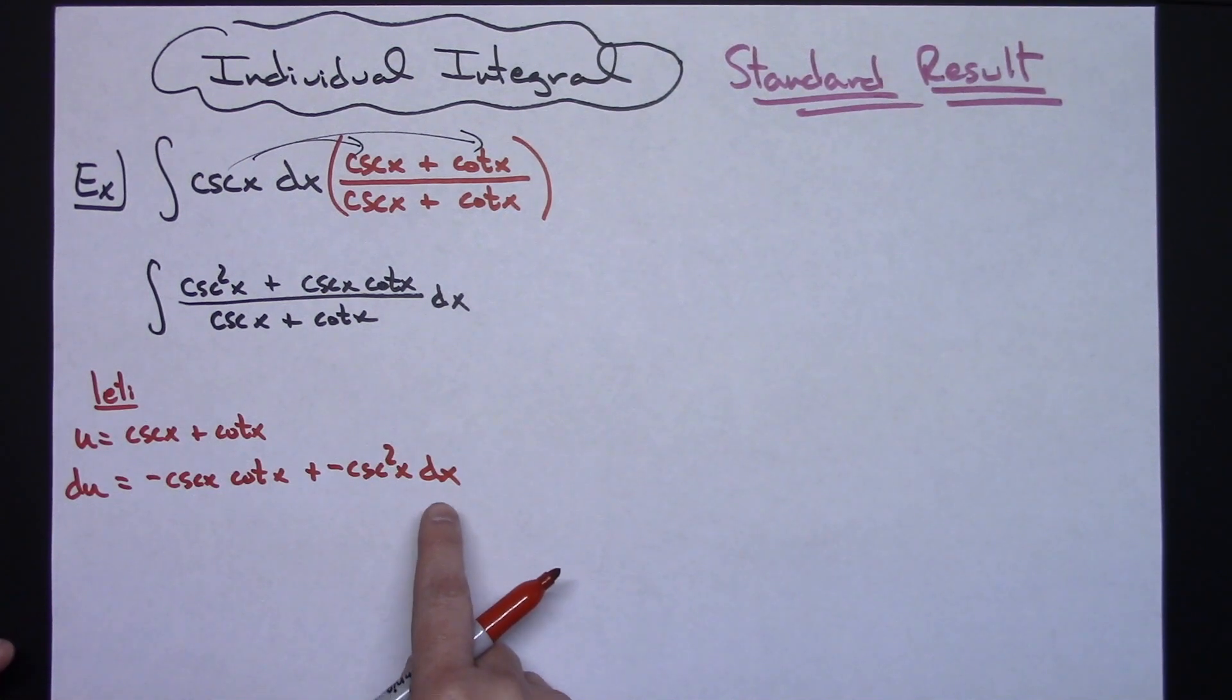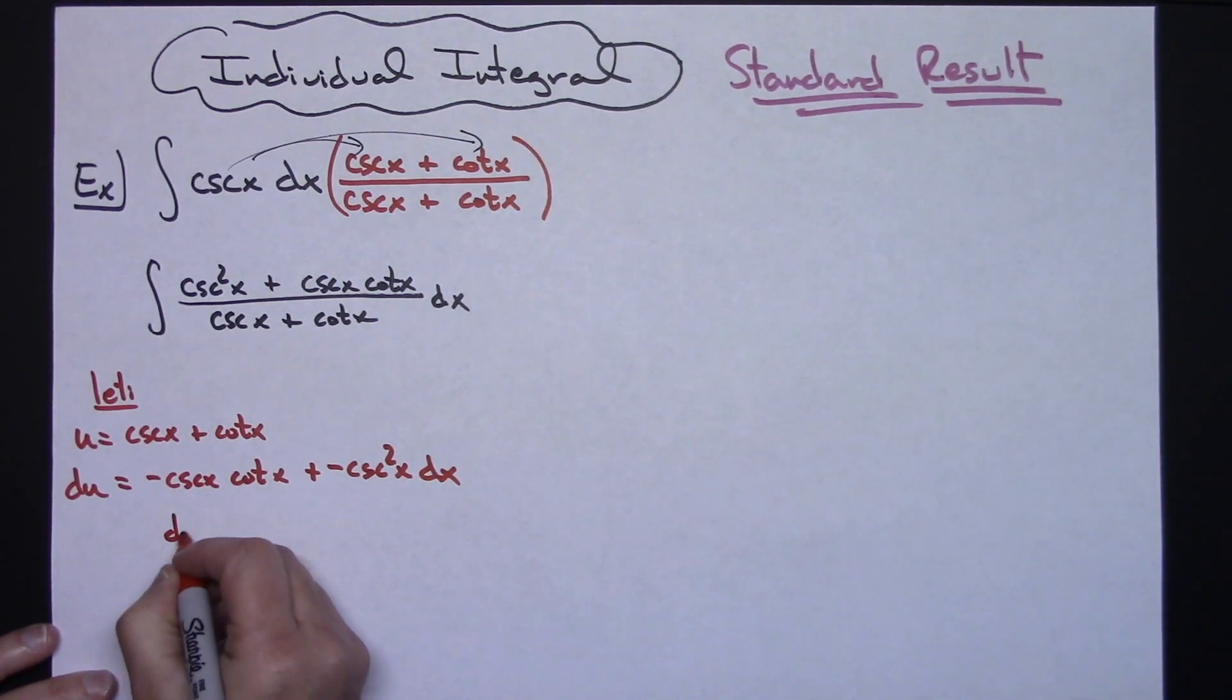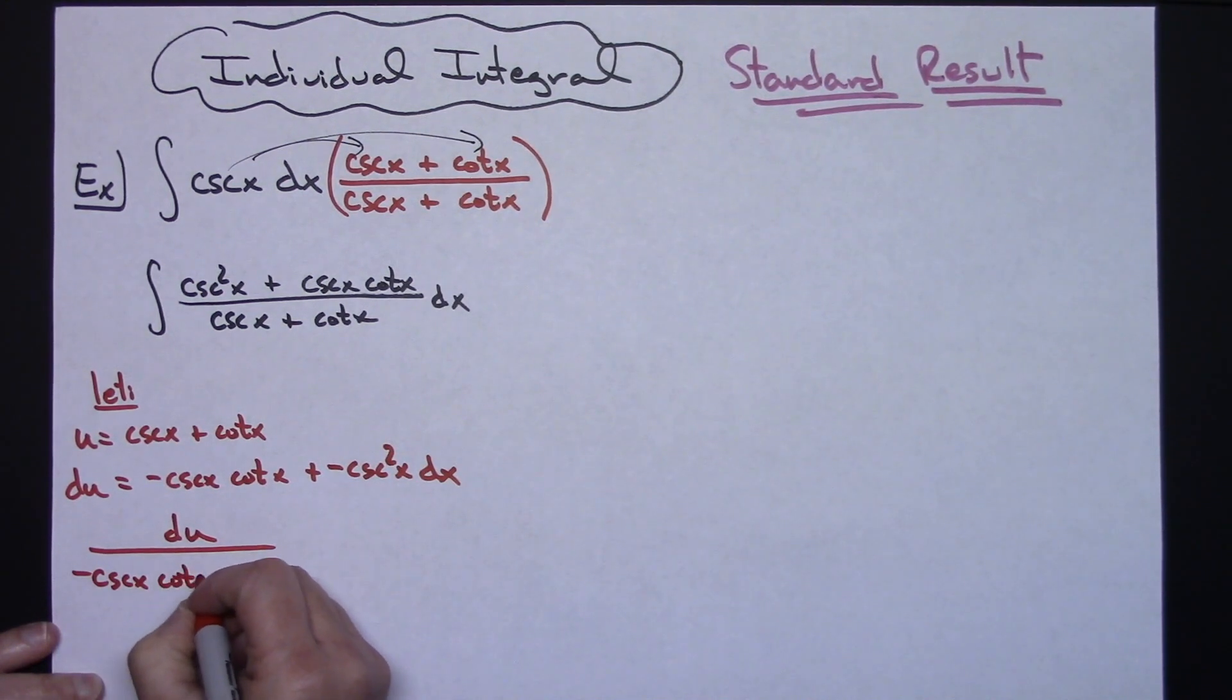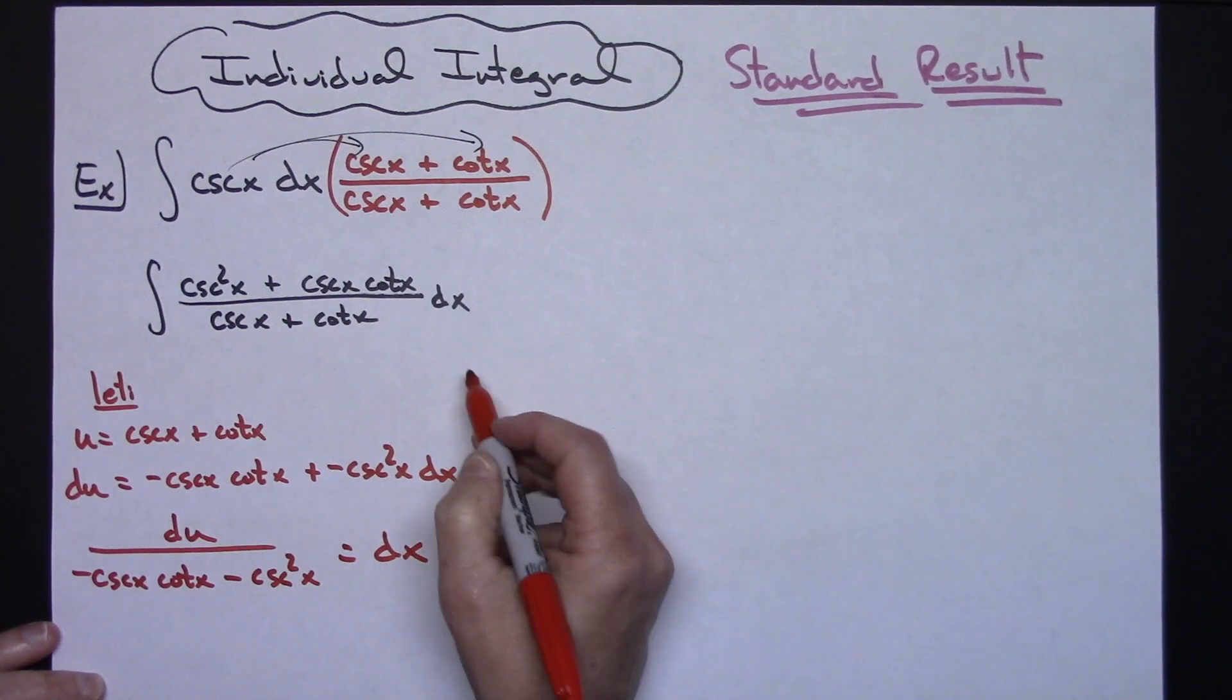Solving for dx, I have du over negative cosecant x cotangent x minus cosecant squared x, equals dx.